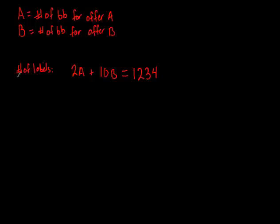The other information has to do with the total amount of money. So again, if we look at the problem under offer A, what an individual had to send in was $7 with their two labels.